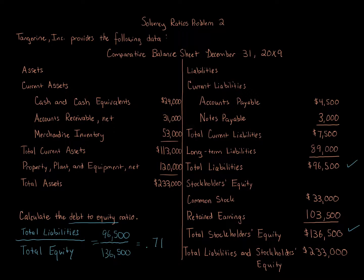With equity, there's risk — someone owning common stock or preferred stock is an equity owner. If the business does bad, that's on them; if it does well, they benefit from the rewards. So if you're lending money and you see a debt to equity ratio greater than one, your debt may be junior to more senior debt already there. If something happens to the business, the more senior creditors get paid first — they get the first bite of the tangerine — and there might not be anything left to cover what you invested. That's the idea behind this ratio.